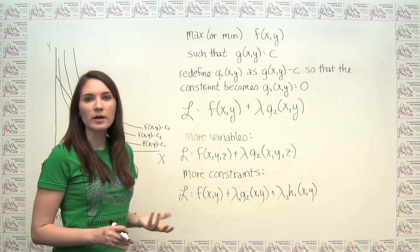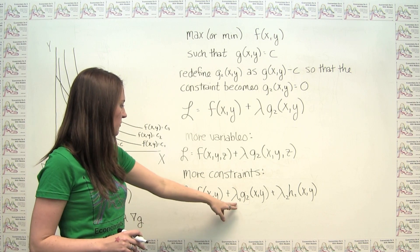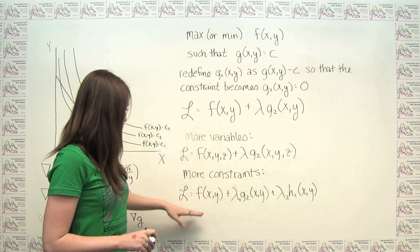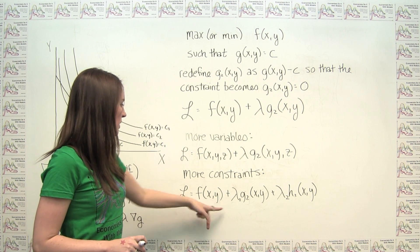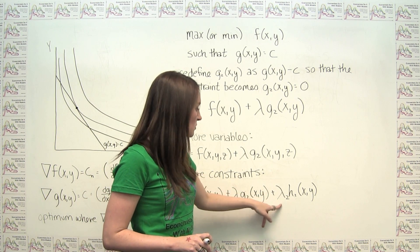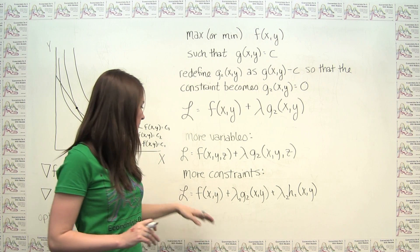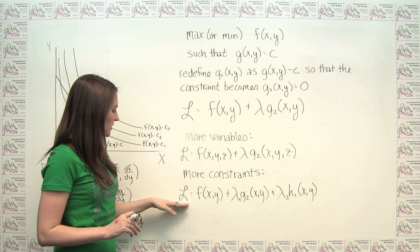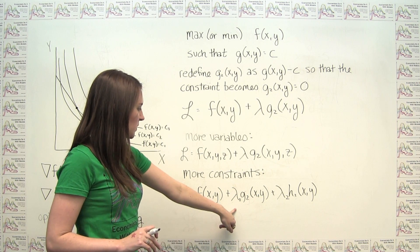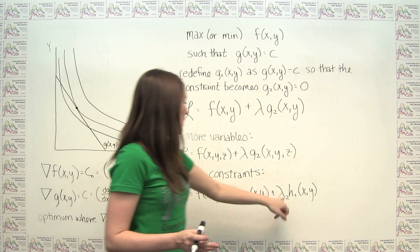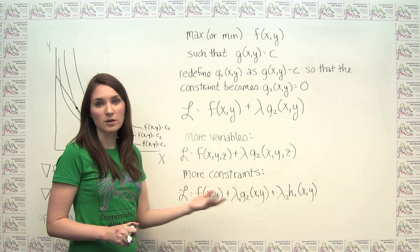Similarly, the Lagrange multiplier approach can handle multiple constraints. You simply define a different lambda for each constraint. For example, with two constraints, L = f(x, y) + lambda₁ · g₂(x, y) + lambda₂ · h₂(x, y). You then find critical values by taking partials with respect to x, y, lambda₁, and lambda₂ — the partial with respect to each lambda recovers the corresponding constraint.